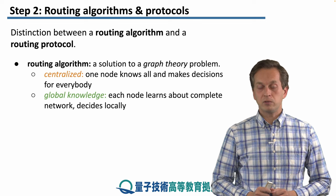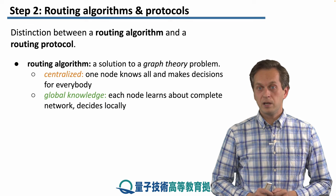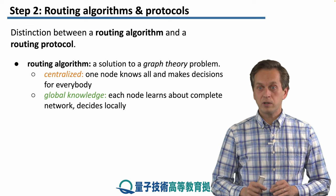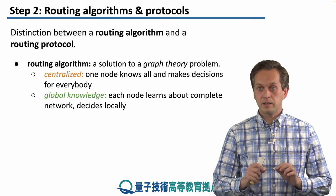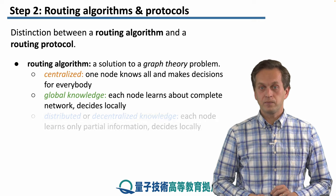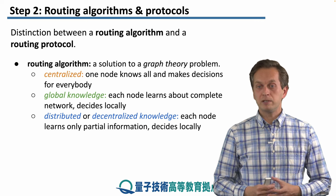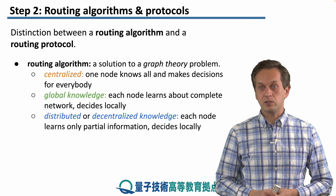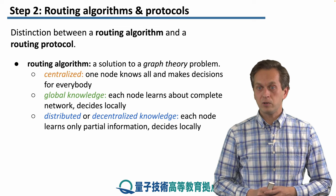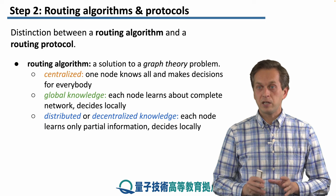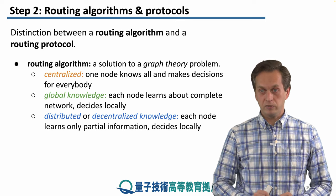A different approach is through global knowledge algorithms, where every node in the network learns the complete network topology, but it decides locally. A third approach is through distributed or decentralized knowledge algorithms, where nodes also make decisions locally, but they don't learn the full knowledge of the network — each node has only some partial information.